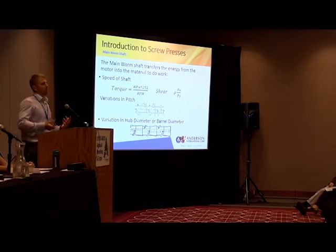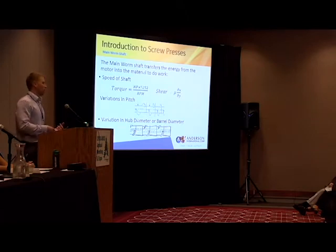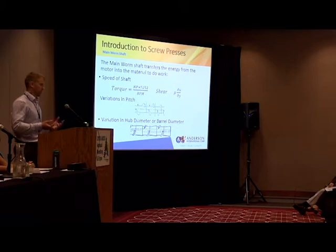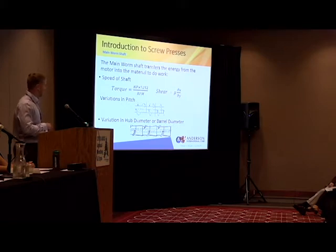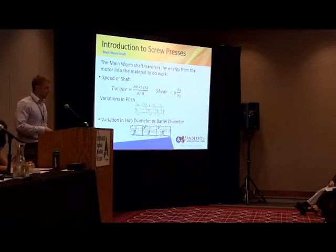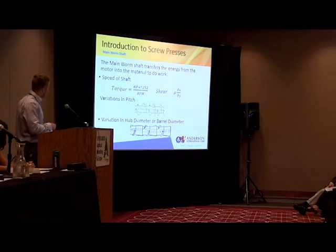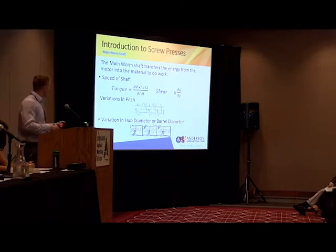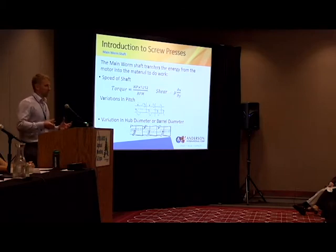How do you determine what type of work you can do with this shaft? There are two counteractive principles: speed and torque. The slower you rotate the shaft, the more torque — or pressing force — you have, the harder you squeeze. But when you rotate slower, you can't push as much material through. When you spin faster, you generate a shear force — shear is proportional to the change in velocity with respect to some plane. The other way to generate resistance is by changing the geometry: you could vary the pitch — the extra distance a flight must travel to complete 360 degrees of wrap — or change the barrel or hub diameter, changing the open volume that material has to be forced into.